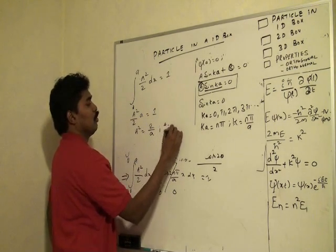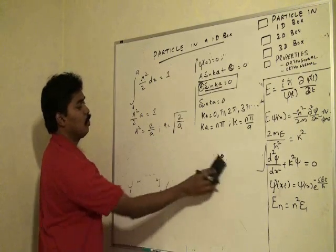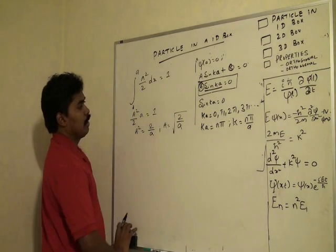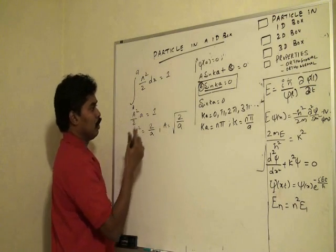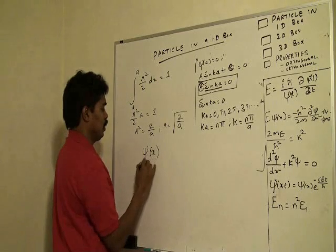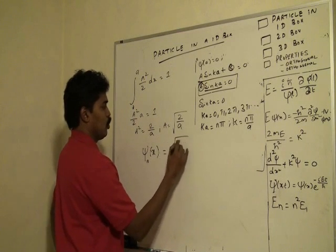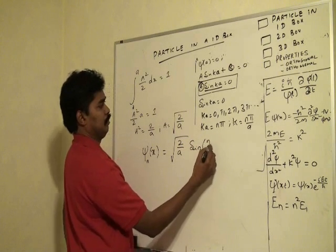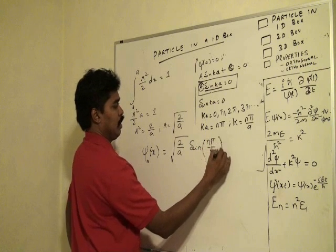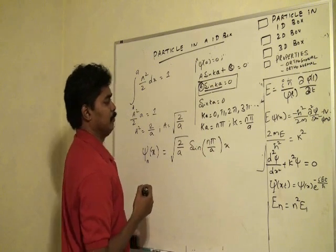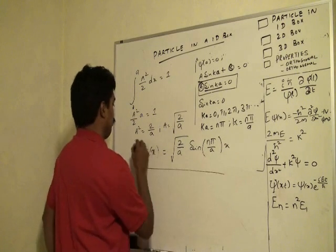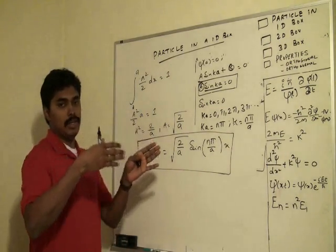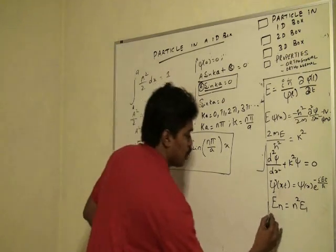So A = √(2/a). We have found the normalization constant A. Applying this to the ψ function, the final wave function is ψ(x) = √(2/a) · sin(nπx/a). This is the wave function which represents the particle within the region 0 to a.